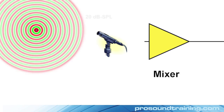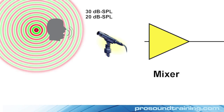Let's say the EIN is 20 dB SPL. If the signal produced by a whisper into the mic is only 30 dB SPL, the signal-to-noise ratio would be 10 dB — not so great. How do you improve the signal-to-noise ratio? By speaking louder. The louder you speak, the higher the signal-to-noise ratio, until you speak so loud that you overdrive the microphone.